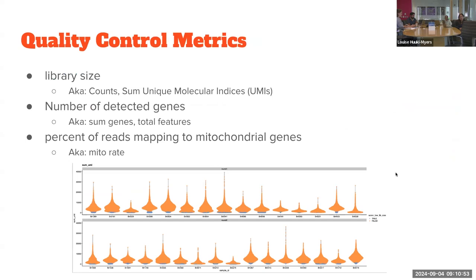When looking at quality control metrics for single-nucleus and spatial data, we consider library size — how many counts, also called UMIs — and the number of detected genes, how many unique genes those counts correspond to, sometimes called sum genes or total features. We also look at percent of reads mapping to mitochondrial genes, where high mitochondrial percent may indicate damaged tissue or debris rather than relevant RNA, which is indicative of poor quality. We examine the distribution of these metrics across samples.